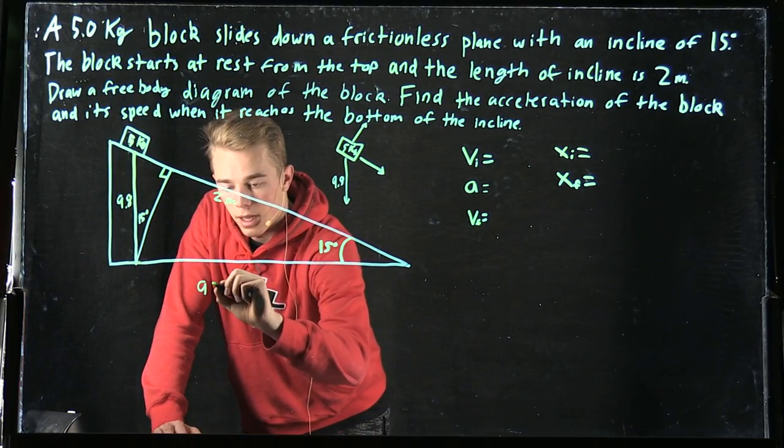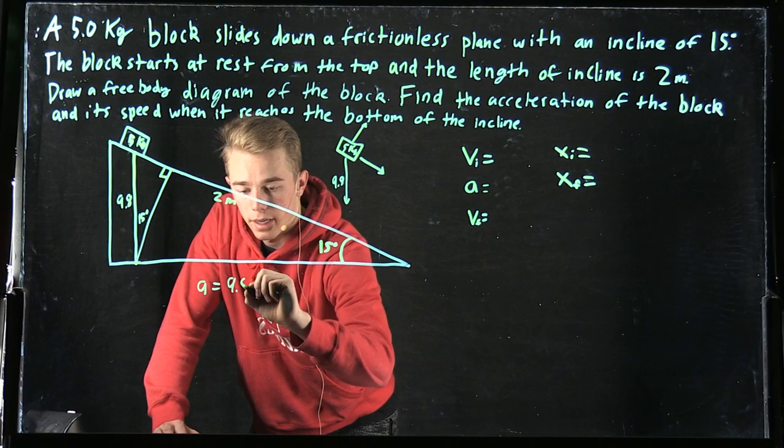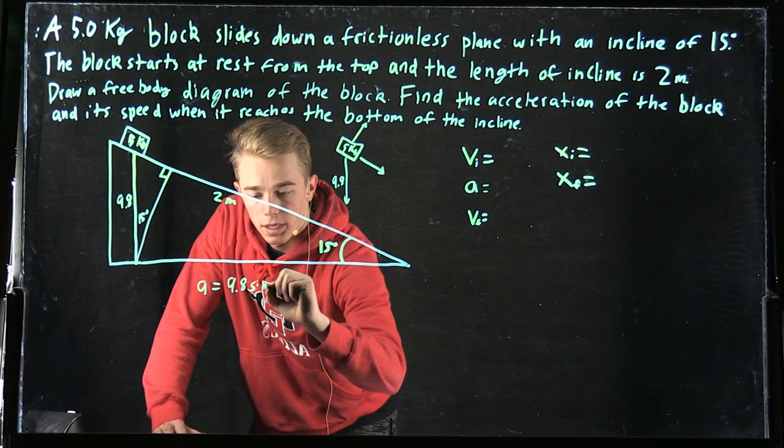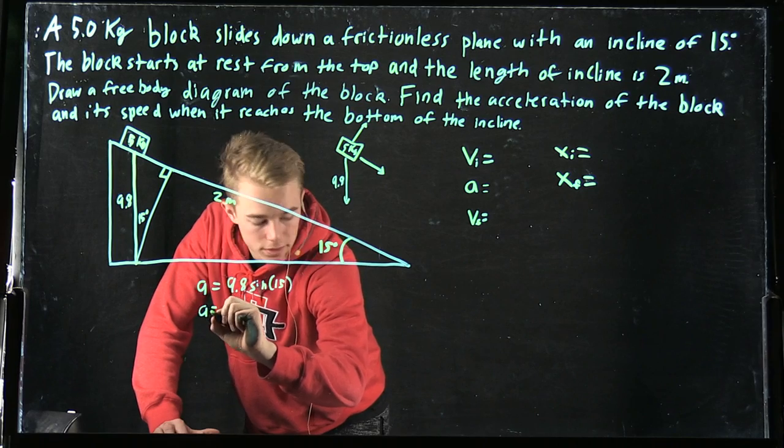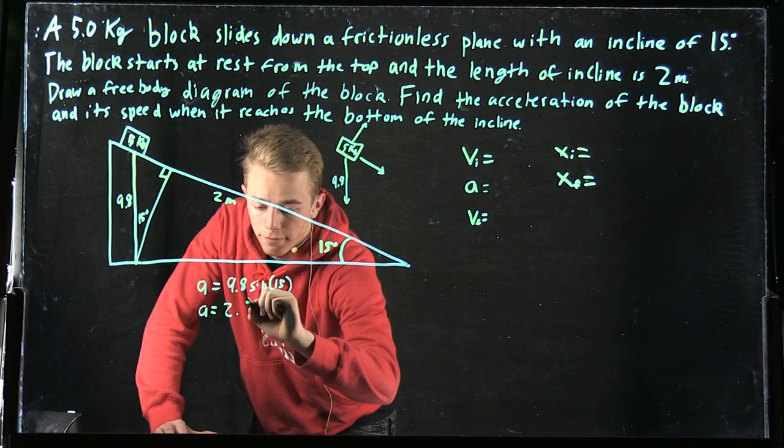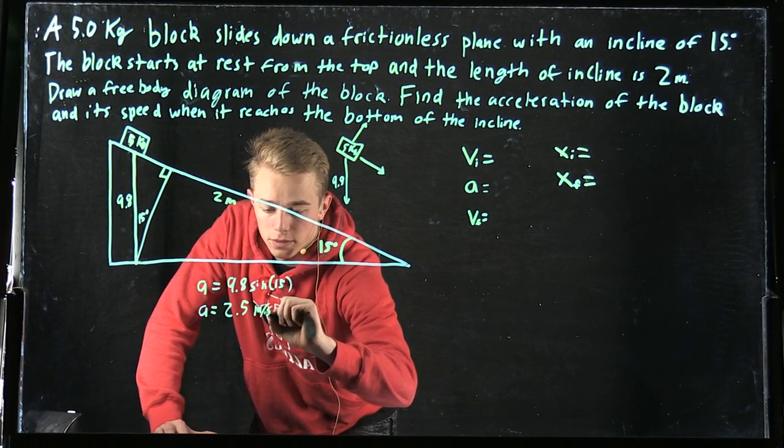So we're going to do a equals 9.8 sine of 15 degrees. That gives us that a is 2.5 meters per second squared.